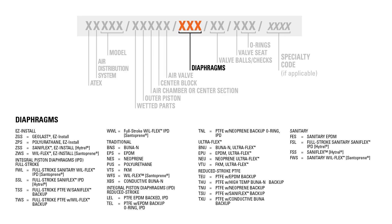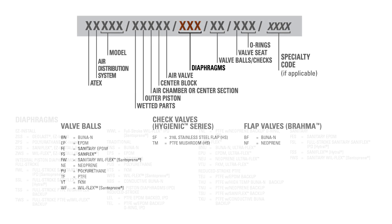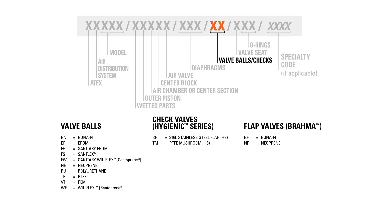The third section of a Wilden AODD pump's model designation denotes the style and material for the diaphragms. Each three-digit combination of letters identifies a specific diaphragm style and material. The fourth section of the model designation denotes the check balls. In the case of the hygienic or Brahma series, this section identifies the material of the flap or mushroom valves used in place of the check balls.